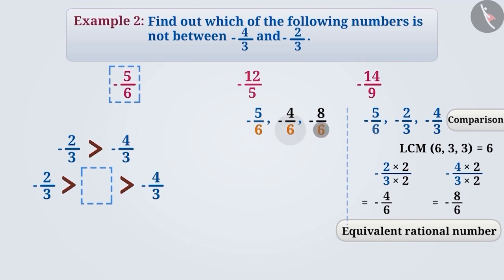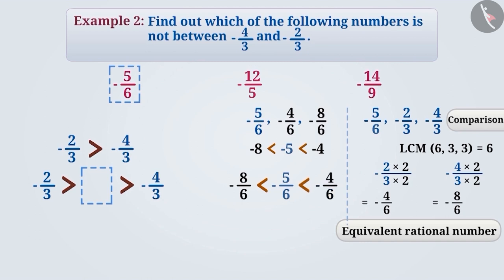Now, since the denominators are equal, we compare their numerators. Minus 8 is smaller than minus 5, and minus 5 is smaller than minus 4. Hence, minus 8 by 6 is smaller than minus 5 by 6, and minus 5 by 6 is smaller than minus 4 by 6. That is, minus 4 by 3 is smaller than minus 5 by 6, and minus 5 by 6 is smaller than minus 2 by 3. Hence, minus 5 by 6 is a rational number between the two.